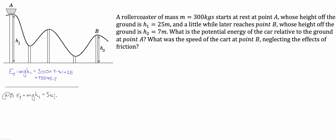The mass is 300 — the only thing that changes is the cart's height. The height at H2 is 7 metres. You can see that the cart goes from 25 to 7, so that decrease is going to be exactly equal to the decrease in potential energy. The fraction that 7 is of 25 determines what the new potential energy is relative to 73,575. So we find that the potential energy at B is equal to 20,601 joules.